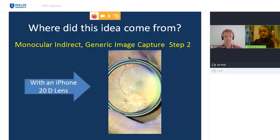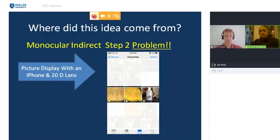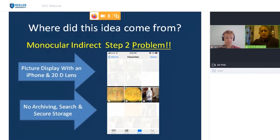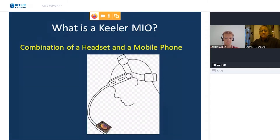The problem is that when you want to display this to your patient, you'll have all your personal pictures mixed in — quite embarrassing. It's not a professional presentation. There's no way to archive, search, or have secure storage. If you lose your phone, you lose your images. With an iPhone or Android it's very difficult to search the image and identify which picture belongs to which patient. This is where the MIO comes in.